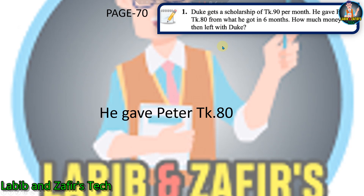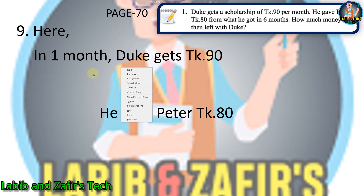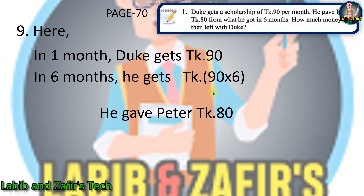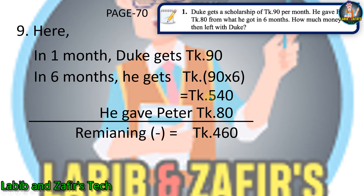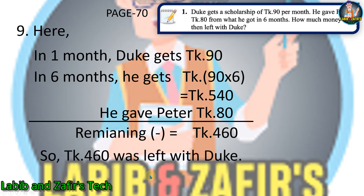Our ninth word problem: Duke gets a scholarship of taka 90 per month — he gave Peter taka 80 from what he received in six months. How much money was left with Duke? In one month Duke gets taka 90, so in six months he gets 90 multiplied by 6, which equals taka 540. He gave Peter taka 80, so remaining is taka 460. Taka 460 was left with Duke.